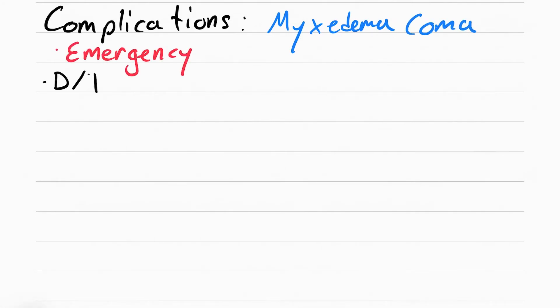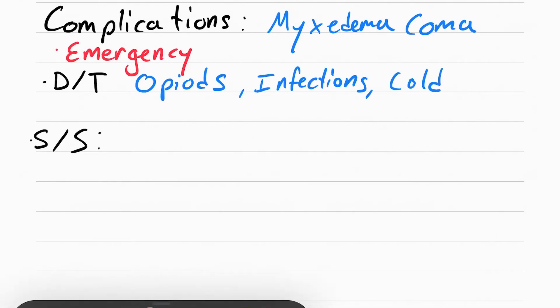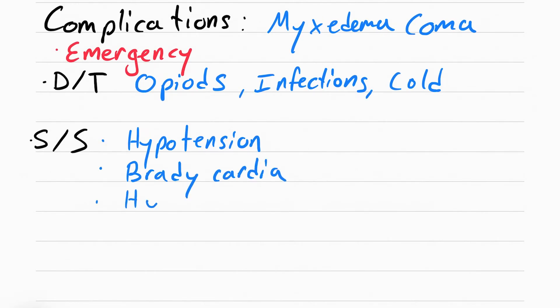Now there's a complication that can happen with hypothyroidism. It's called myxedema coma, and this is an emergency. It's usually triggered by opioids, infection, or being cold. The signs and symptoms are the same as hypothyroidism, only worse—so severe hypotension, severe bradycardia, and severe hypothermia. They also breathe a lot less, so much that they can even go into a coma.